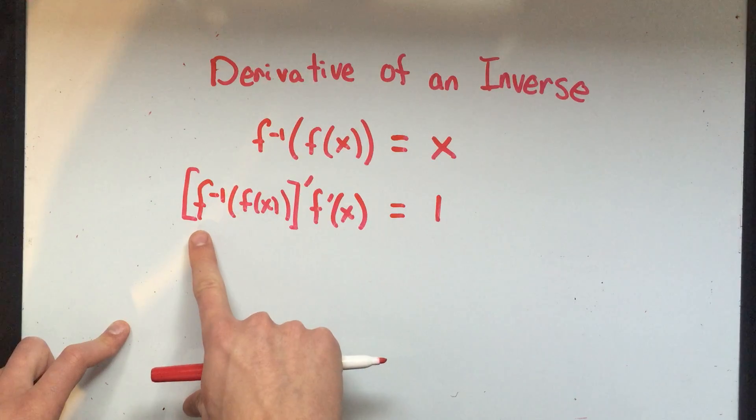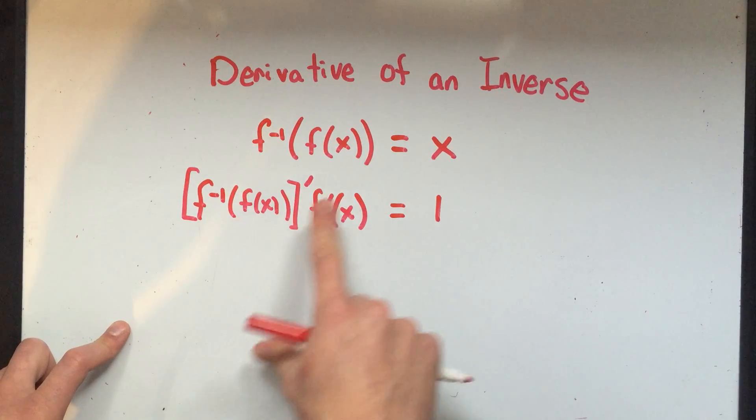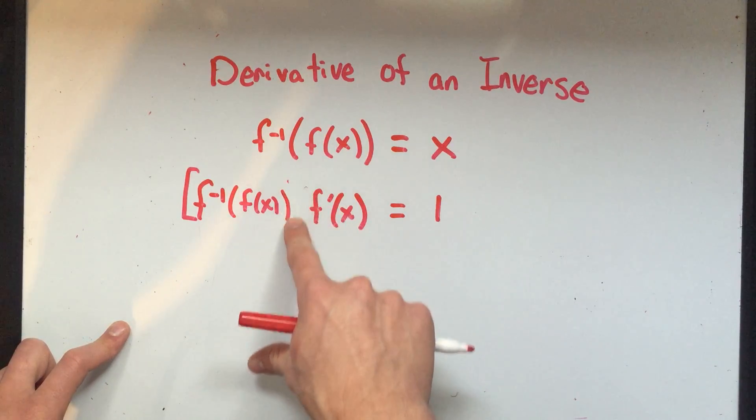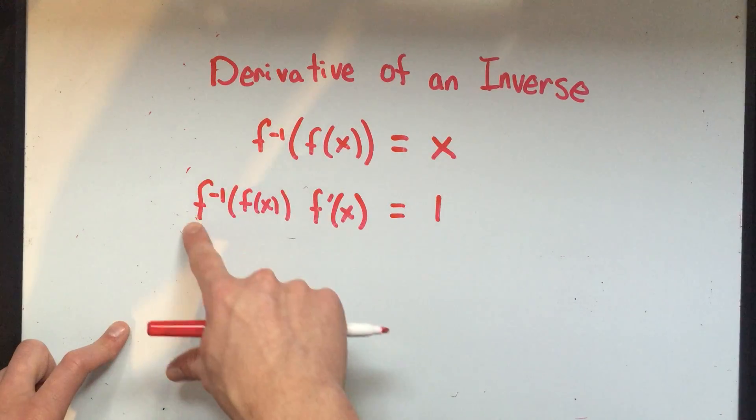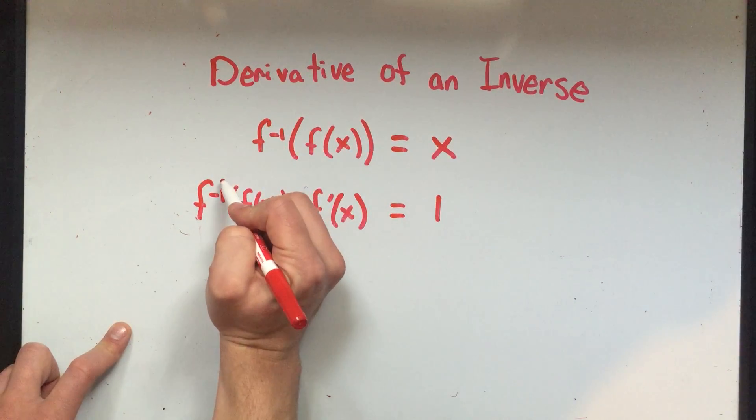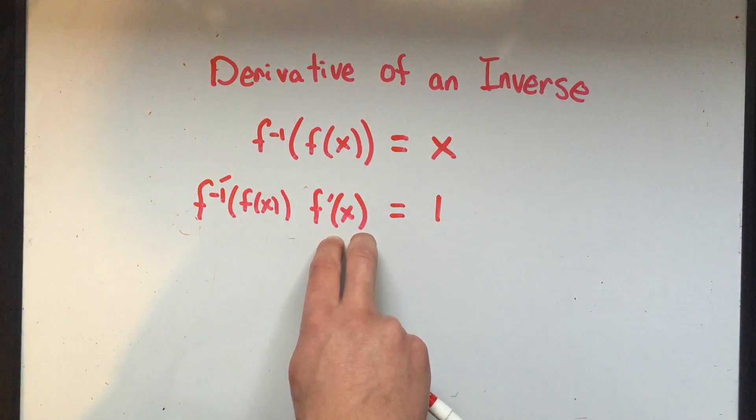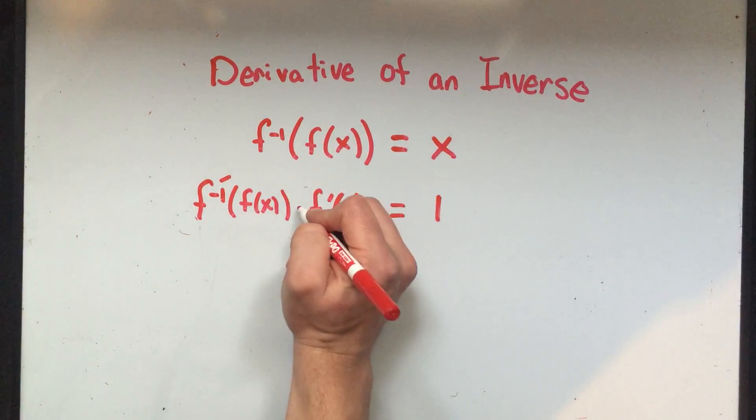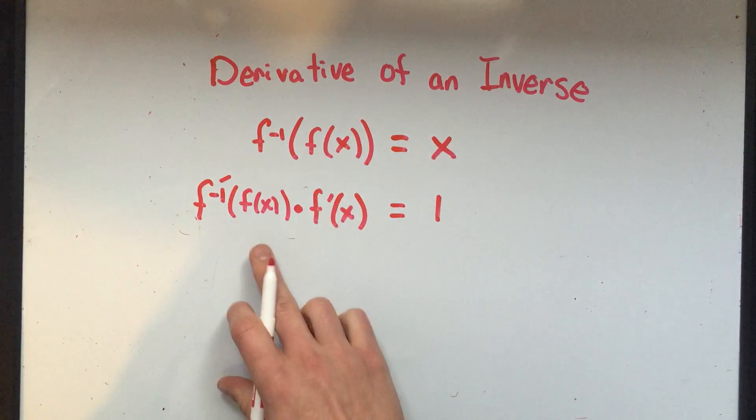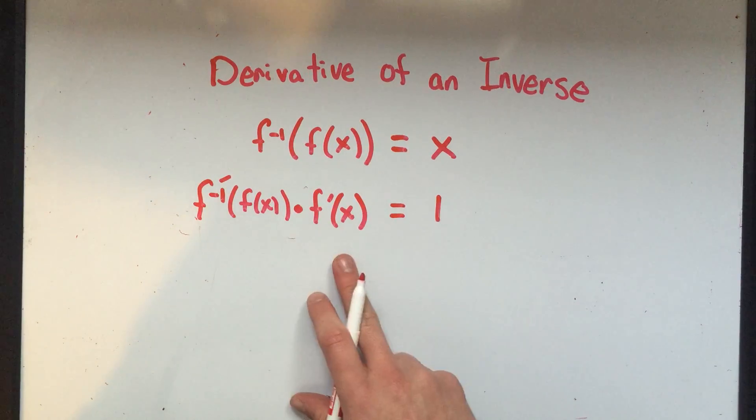It's the derivative of the outside function times the derivative of the inside function. It's actually the derivative of f inverse still evaluated at f of x times the derivative of the inside, times the derivative of f of x. So these are multiplied. That's just the chain rule.